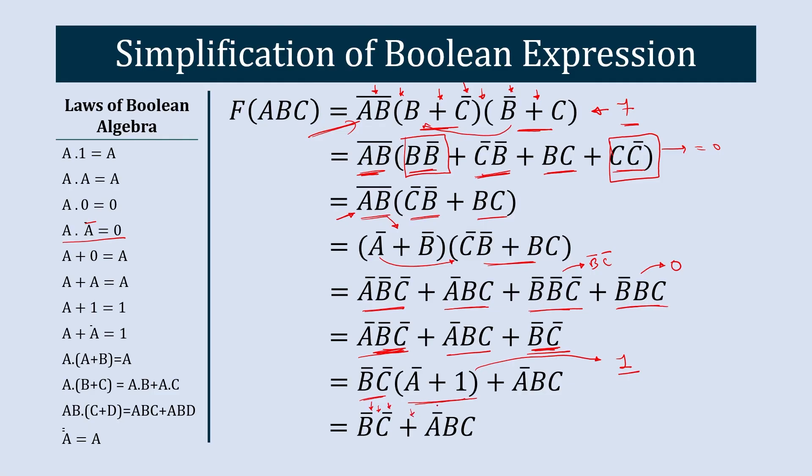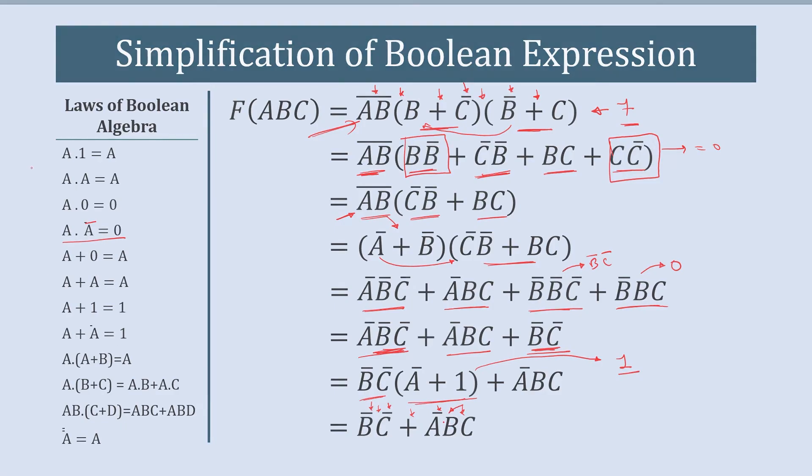To represent this simplified equation we need six gates — including a three-input AND gate — compared to seven gates before simplification.